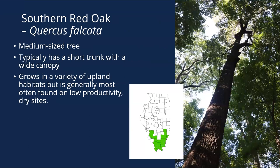Southern red oak: if you get into the southern third of the state, we have both northern red oak and southern red oak. Southern red oak is a medium-sized tree that can get pretty large, typically with a short trunk and a wide canopy. This one looks a lot like a black oak, to tell you the truth — unless you have the leaves in hand, a lot of times you'll mistake these two. It generally prefers upland habitats but is found on lower productivity, drier sites, growing right with black oak often.